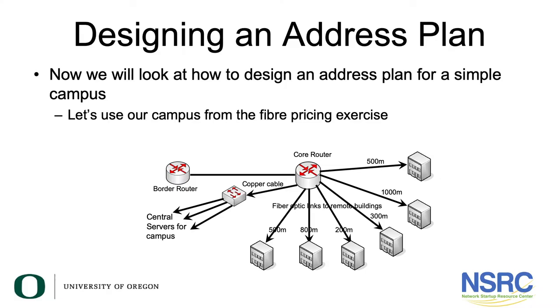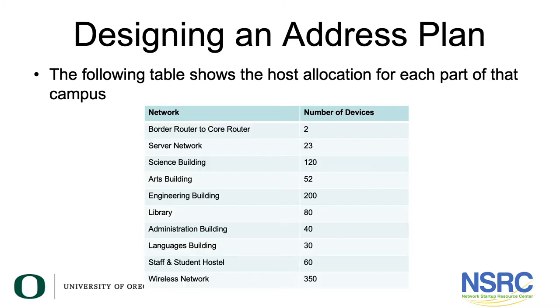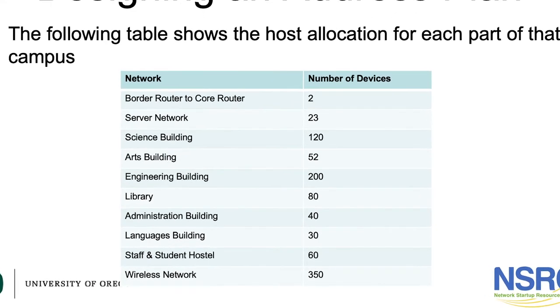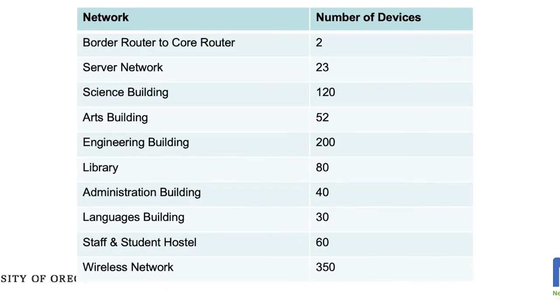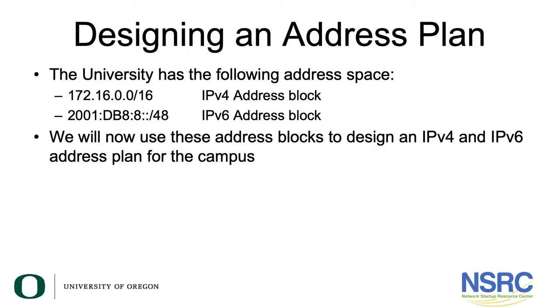We will look at how to design an address plan for a simple campus. We will be using our campus from the fiber pricing exercise. As you can see on screen, we have six buildings with a server LAN and a core and border router. The following table shows the host allocation for each part of that campus. The university will be using the IPv6 address block 2001:DB8:8::/48 to design an IPv6 address plan for the campus.